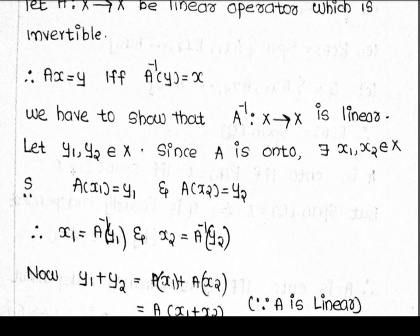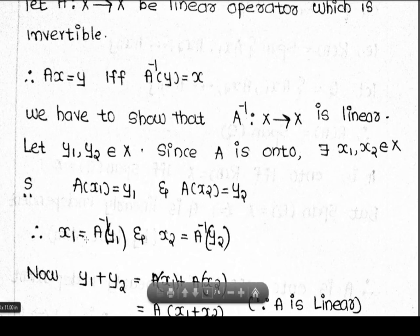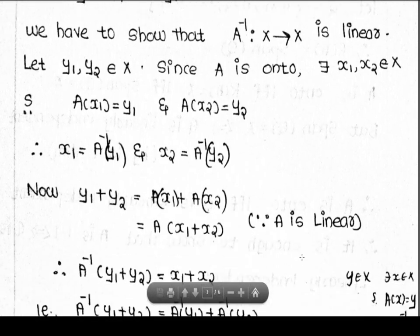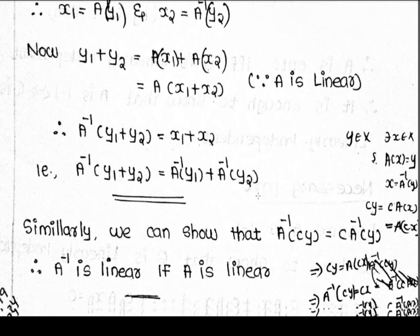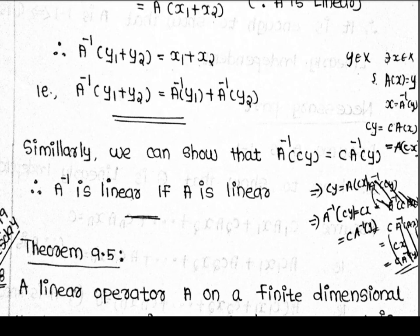Choose arbitrary elements y1 and y2 in Y. Let x1 = A⁻¹(y1) and x2 = A⁻¹(y2), so A(x1) = y1 and A(x2) = y2. For y1 + y2, we need A(x1 + x2) = y1 + y2, so A⁻¹(y1 + y2) = x1 + x2 = A⁻¹(y1) + A⁻¹(y2). Thus the first condition holds.